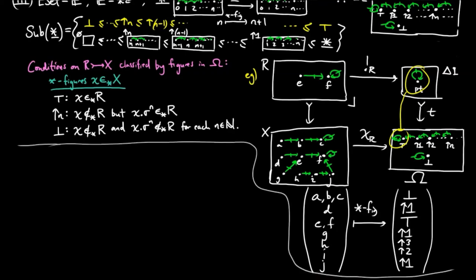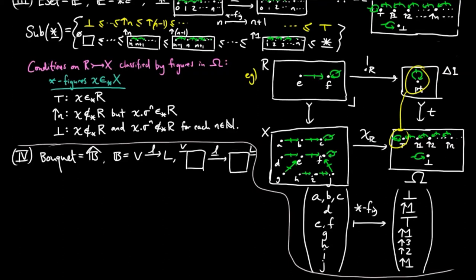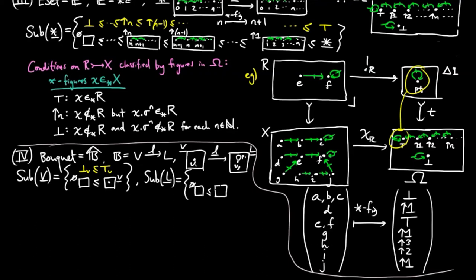In the category of bouquets, which is a category of pre-sheaves on the category with two objects v and l and one non-identity morphism little l, by Yoneda there is the following morphism of containers, where underline v is a container with one vertex and no petals, and underline l has one vertex and one petal. The sub-objects of underline v are the empty sub-object and the identity, while the sub-objects of underline l are the empty sub-object, the object p_v with one vertex and no petals, and the identity sub-object.